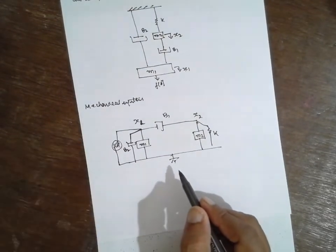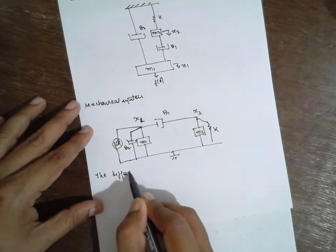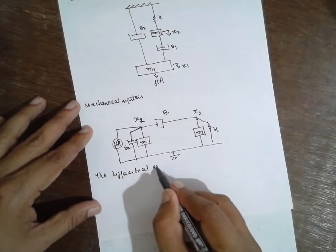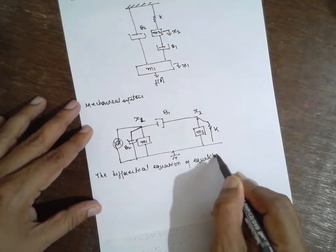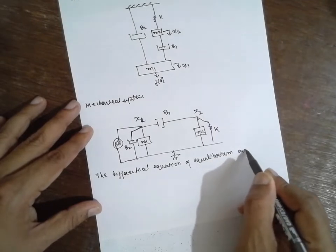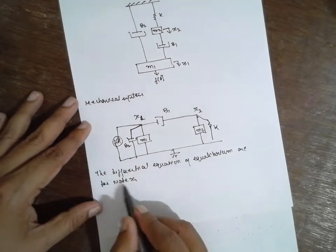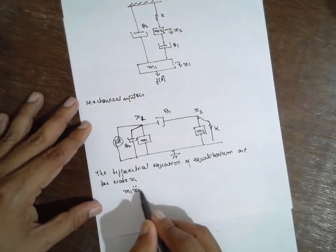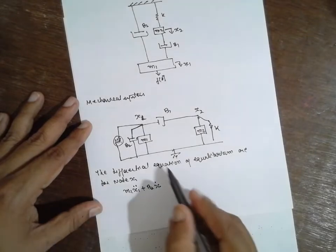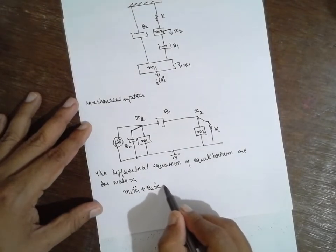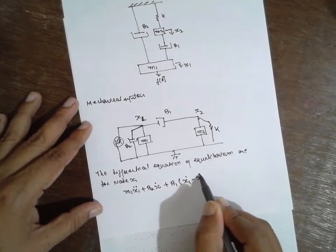Find out the differential equation for the equilibrium. Differential equations for the equilibrium for node 1, that is X1. X1 is nothing but M1 X1 double dot plus B2 X1 dot plus B1 (X1 dot minus X2 dot) is equal to F of t.